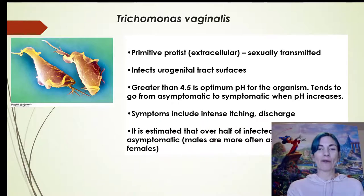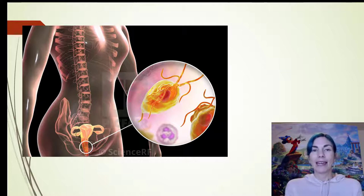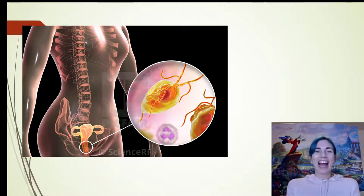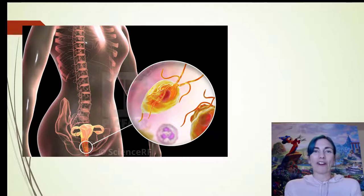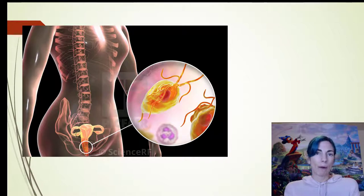You can actually find Trichomonas in urine samples when somebody is infected. As somebody who has taught human physiology for 16-plus years, I've seen a few urine samples with Trichomonas in them. The prevalence rate isn't exactly known because it's not a life-threatening infection — more of an annoyance — so we don't have great statistics. One study looking at prevalence among women in Iran found about a one to two percent prevalence rate.